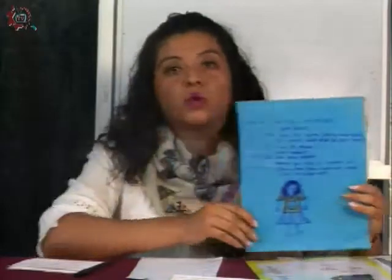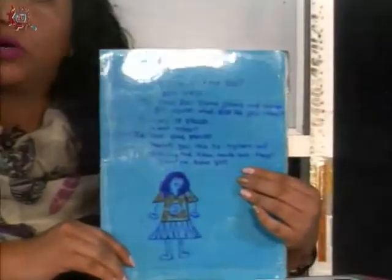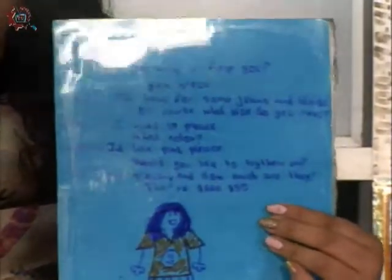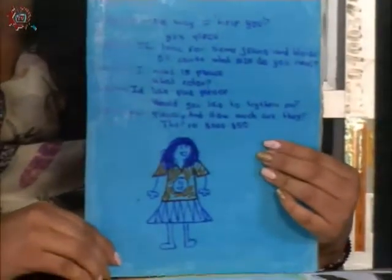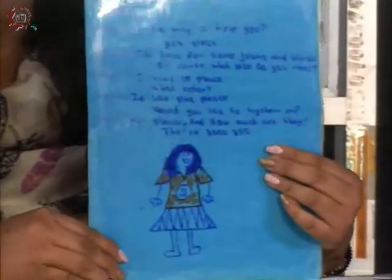El proyecto de la actividad del Bloque 1 es preguntar sobre una prenda de vestir en una tienda departamental. Van a elaborar una pequeña conversación, un pequeño texto, en base al ejemplo que viene en su libro en el Bloque 1, que es pedir y dar información sobre un servicio a la comunidad. La práctica social o contexto social es una tienda de ropa: compra y venta de prendas de vestir o accesorios.